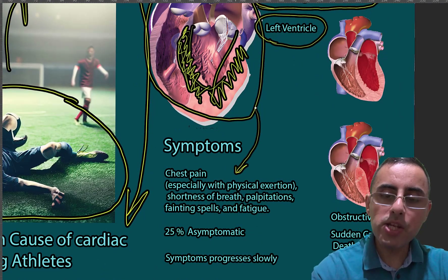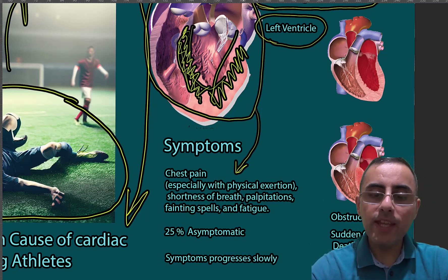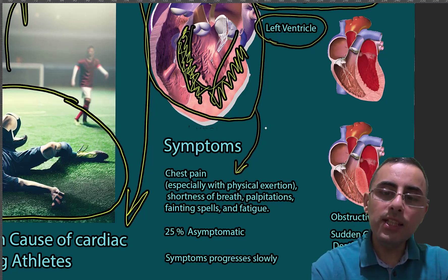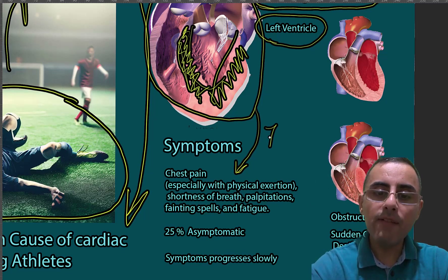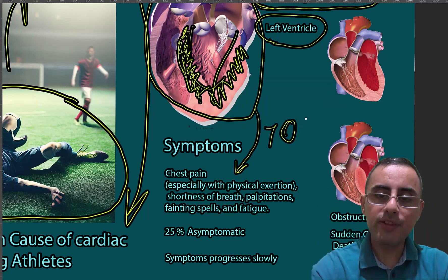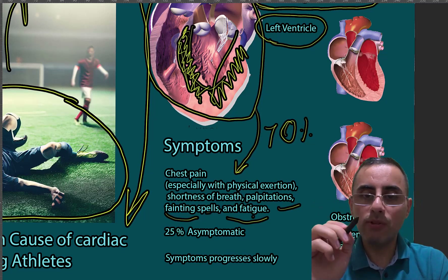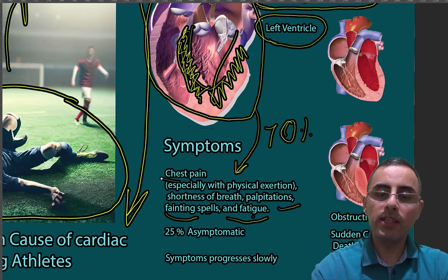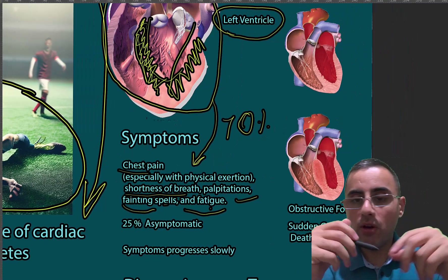The most common symptoms are chest pain, especially during physical activity, and shortness of breath. In 70 percent of cases — roughly two-thirds — we have chest pain and shortness of breath. In rare cases we have other symptoms such as fainting, fatigue, and palpitations, but those are not the most common symptoms of hypertrophic cardiomyopathy.